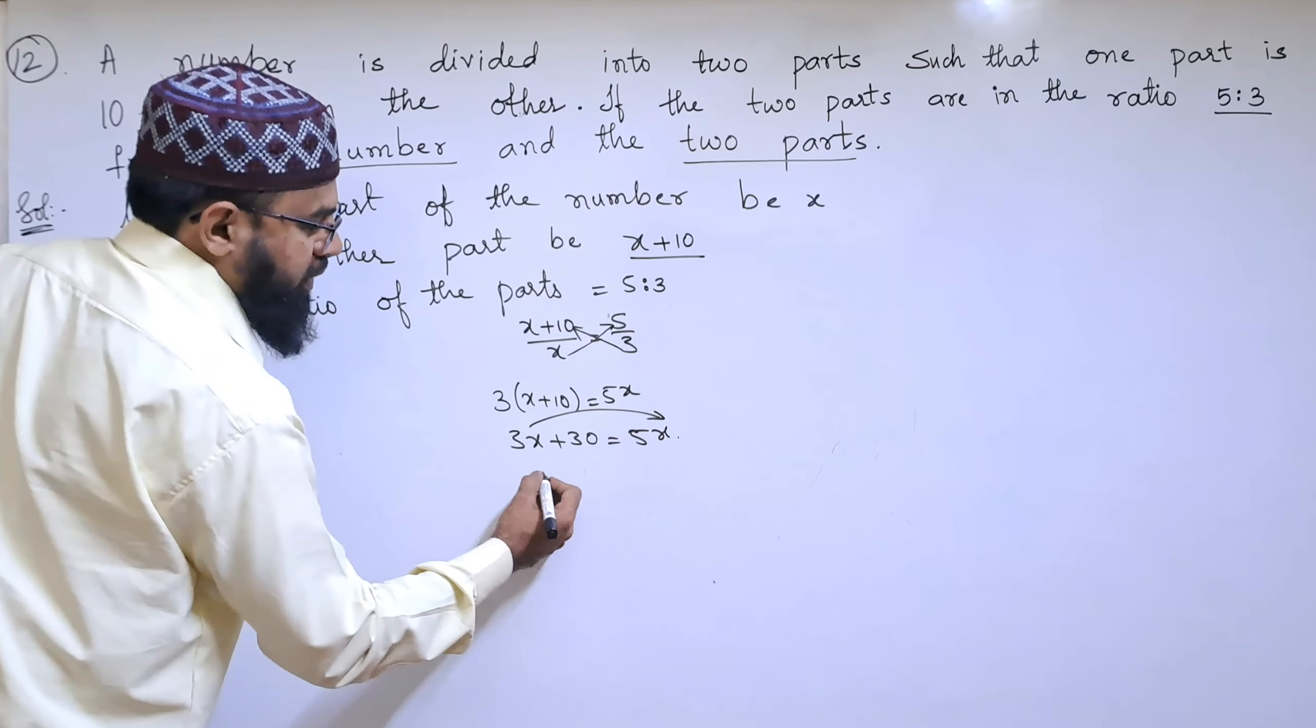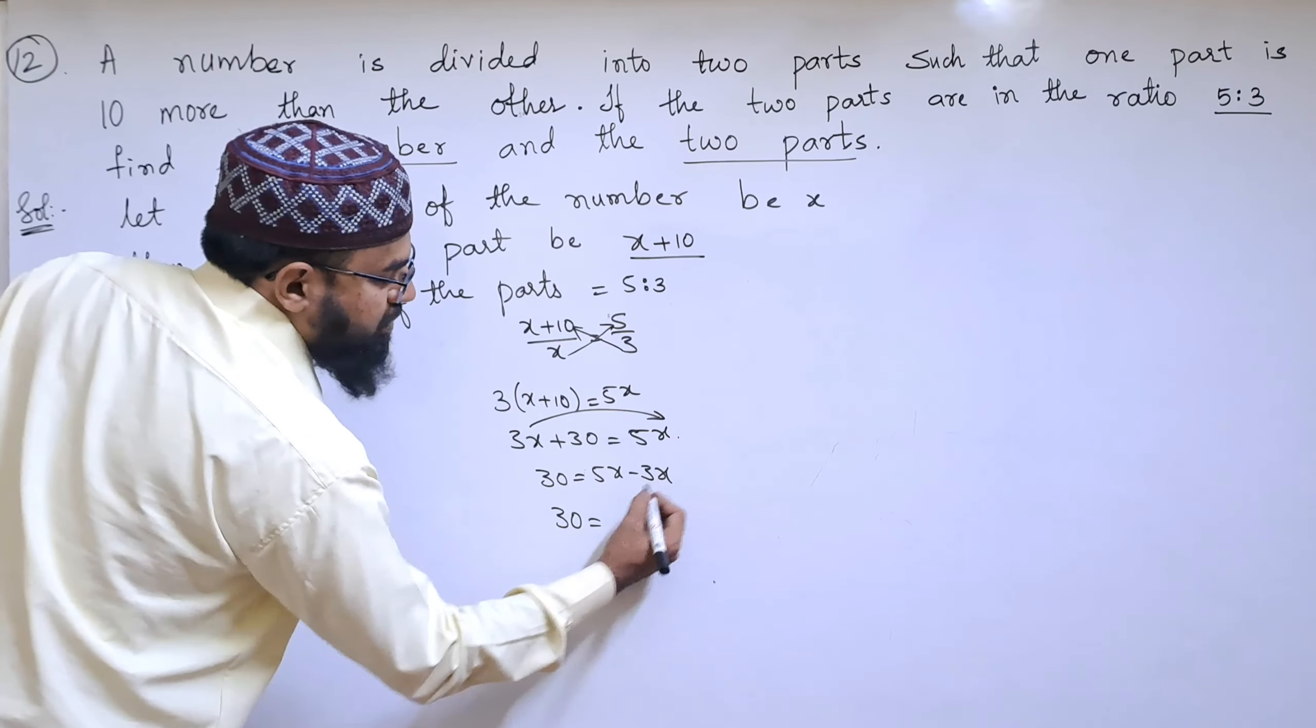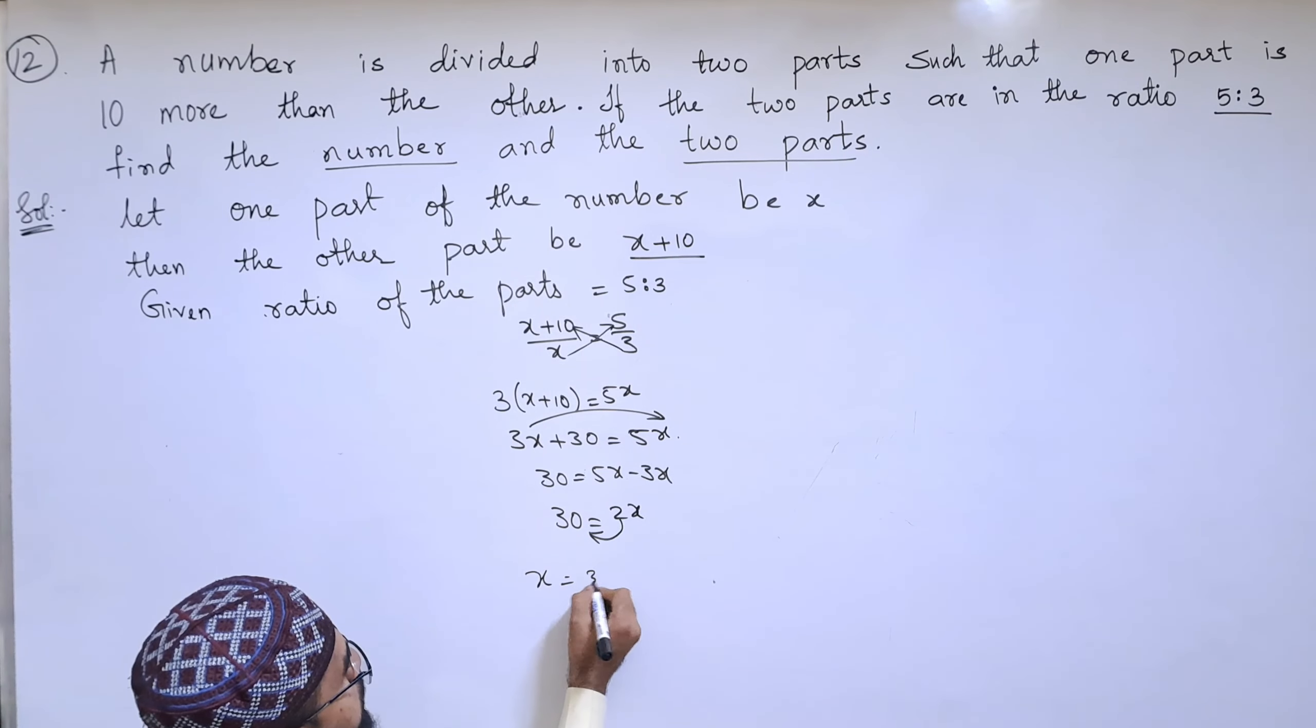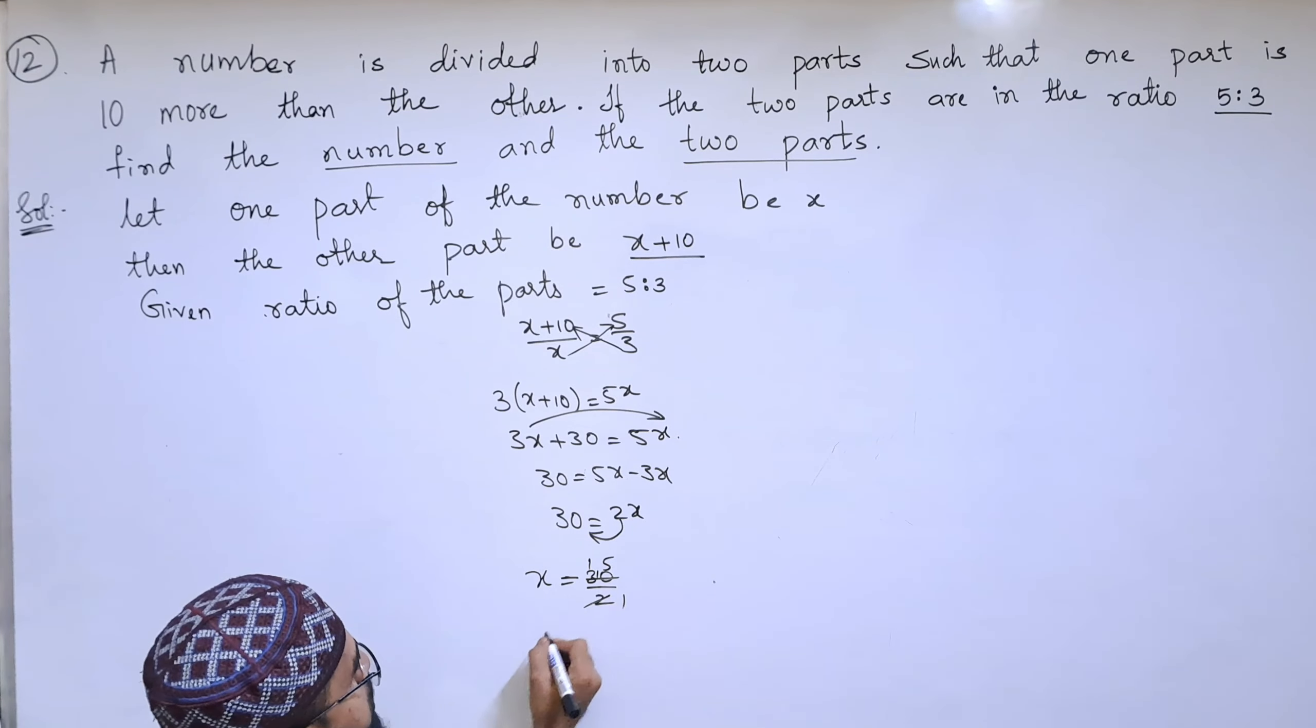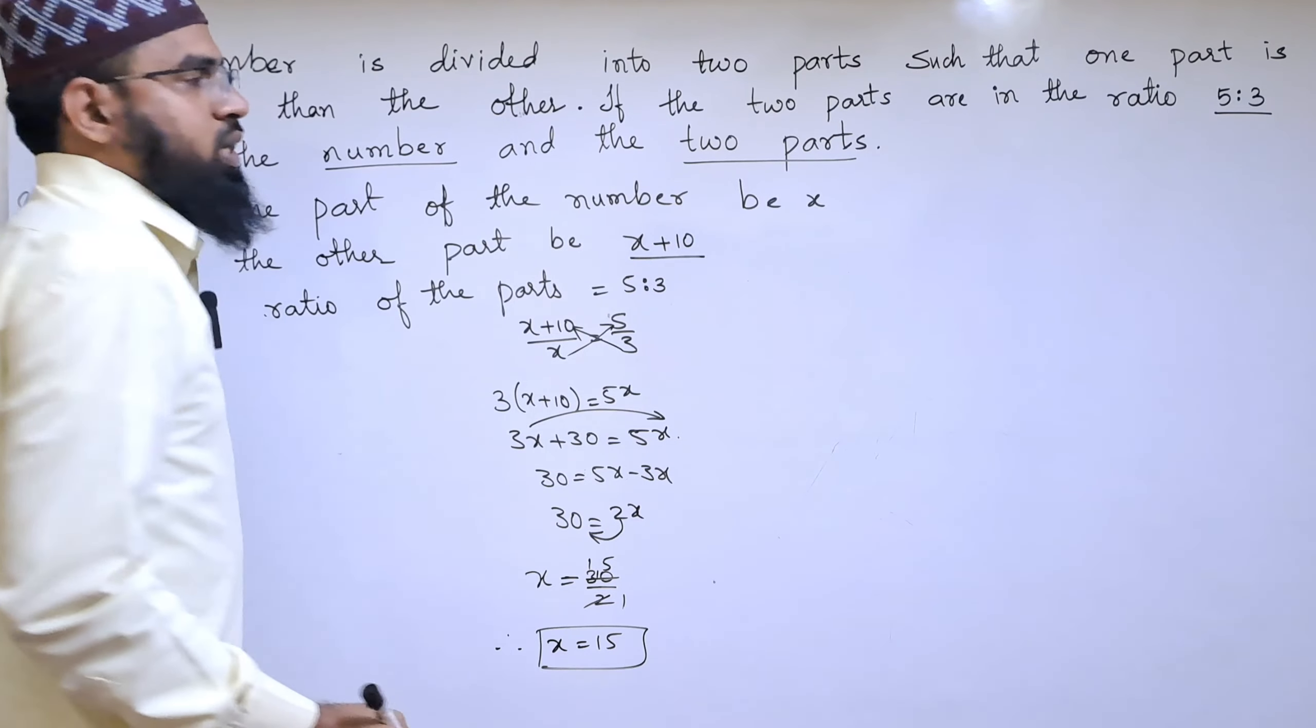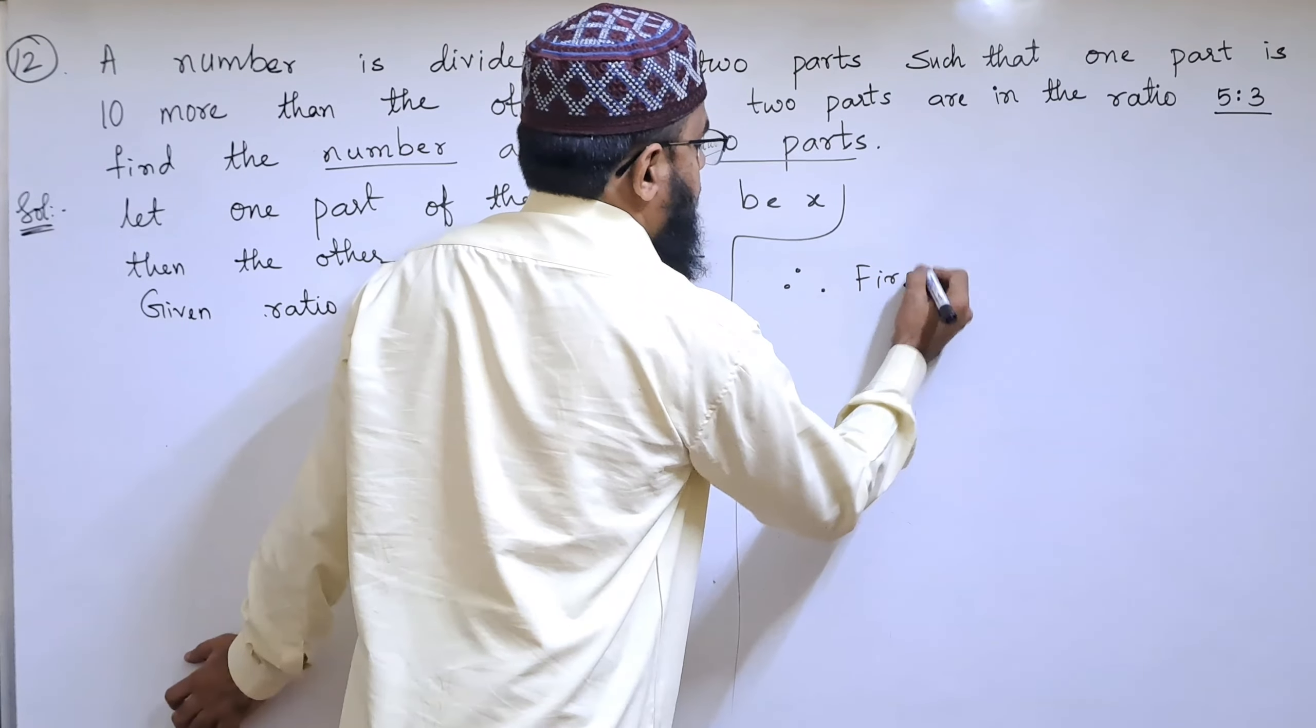Let us rearrange. 30 equals 5x minus 3x. 30 equals 2x. Therefore, x equals 30 divided by 2, which is 15.